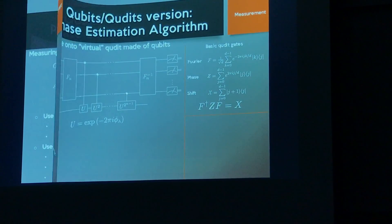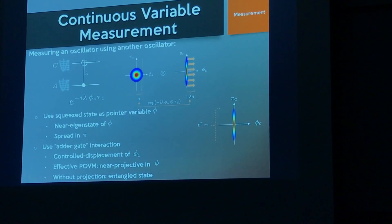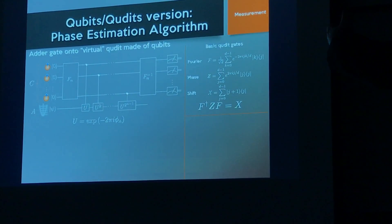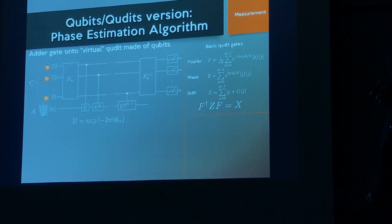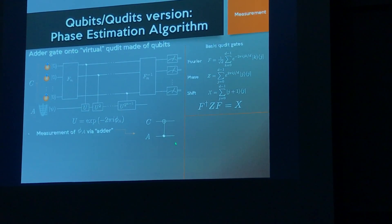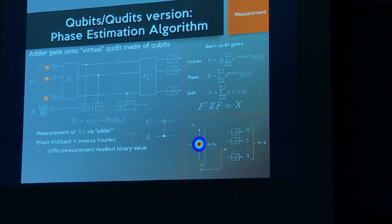This is an adder gate — you displace one system depending on the value of the other's quadrature. For the analog-to-digital conversion, the similar gate uses the phase estimation algorithm from quantum computing. We want an adder but with the control system made of qubits for binary readout. We start with spin-ups, do a Fourier transform producing a uniform superposition, then expand the target state in eigenstates of the observable, and acting an exponential of an operator onto an eigenstate produces a phase — a kickback through tensor products.